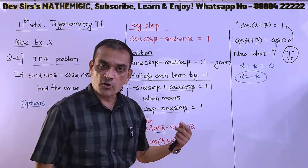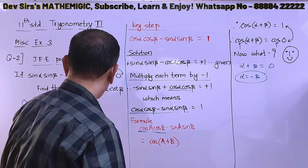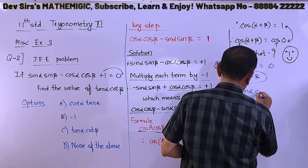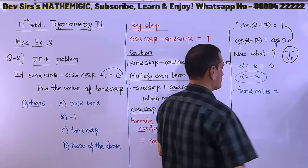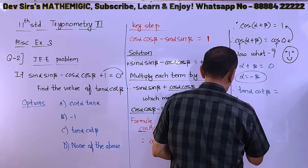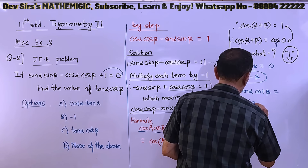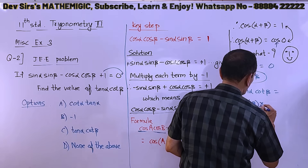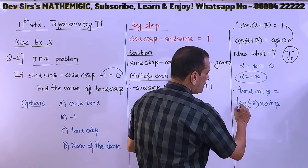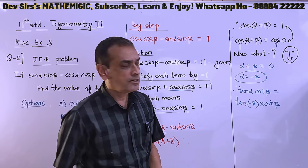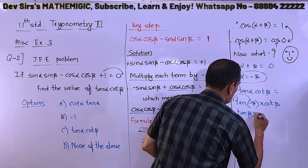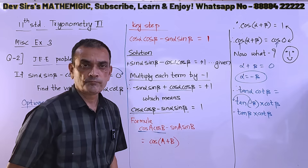So from alpha equal to minus beta, in the expression tan α cot β, for alpha I am going to write minus beta. So tan(−β) cot β. Since tan of minus theta gives minus sign in front, I get minus tan β into cot β — that is the answer.